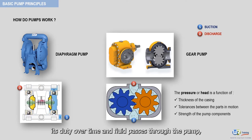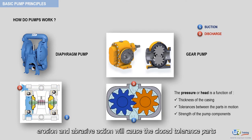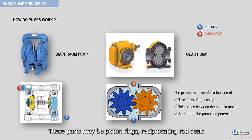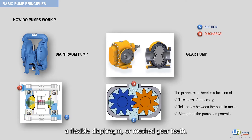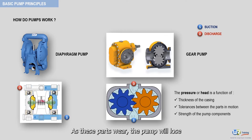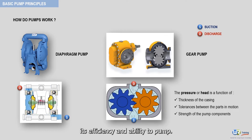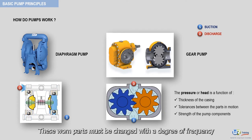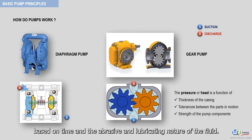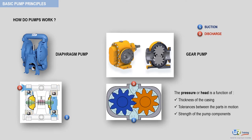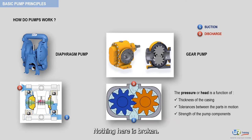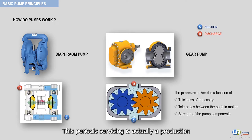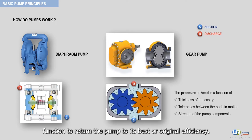As the pump performs its duty over time and fluid passes through the pump, erosion and abrasive action will cause the close tolerance parts to wear. These parts may be piston rings, reciprocating rod seals, the flexible diaphragm, or meshed gear teeth. As these parts wear, the pump will lose its efficiency and ability to pump. These worn parts must be changed with a degree of frequency based on time and the abrasive and lubricating nature of the fluid. Changing these parts should not be considered as breakdown maintenance — nothing here is broken. This periodic servicing is actually a production function to return the pump to its best or original efficiency.